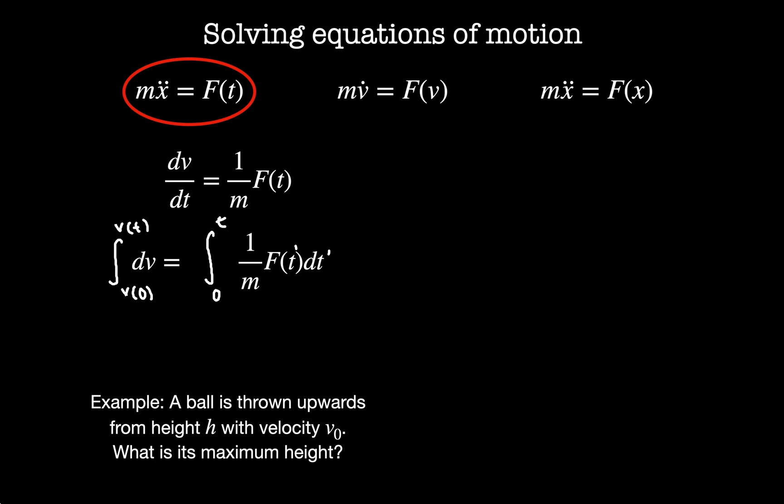So an example of problems like this is imagine I have a ball thrown upwards from height h with velocity v₀. What is the maximum height? This is actually asking about position. What I've written down here is something that's a function of velocity. So I have v(t) minus v₀ equals some function. If I want to get my position coordinates, I just integrate it again. So I integrate once more and I will get my x as a function of t.